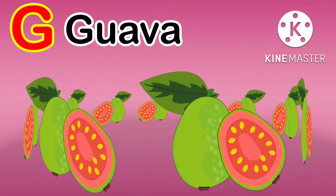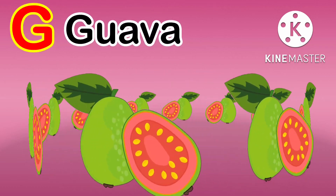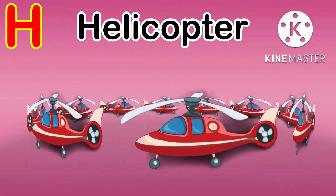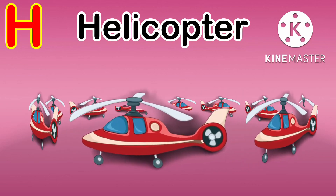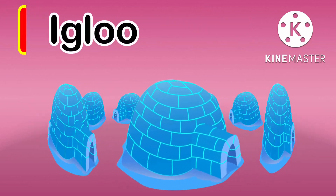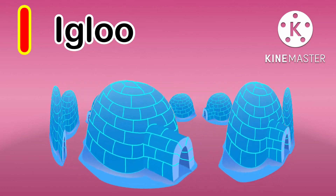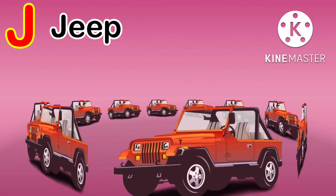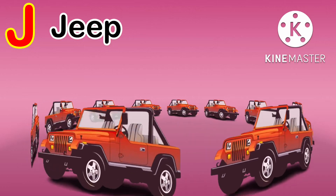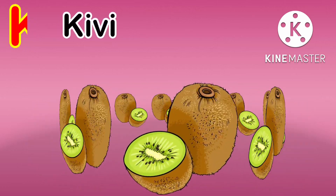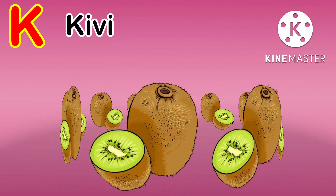G for guava, H for helicopter, I for igloo, J for jeep, K for kiwi.